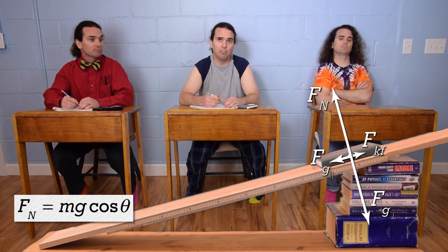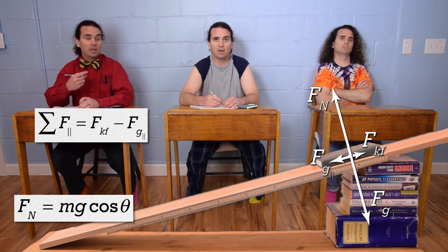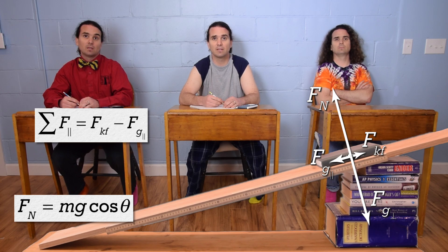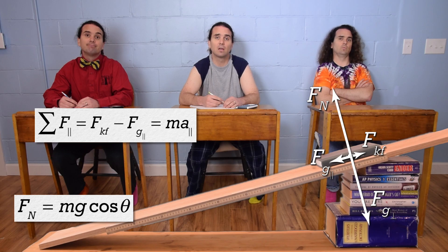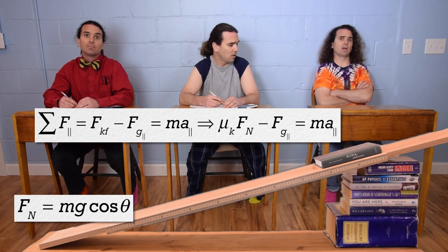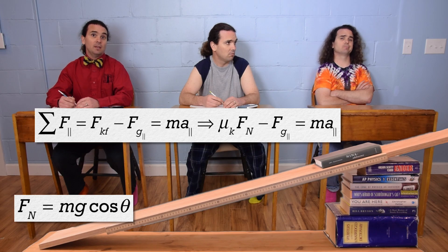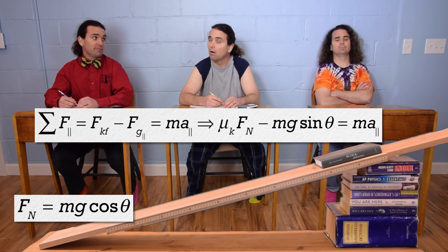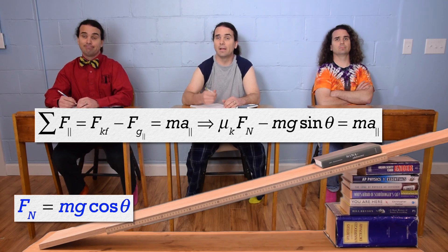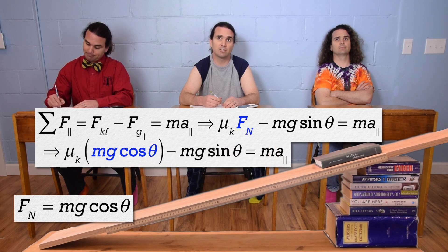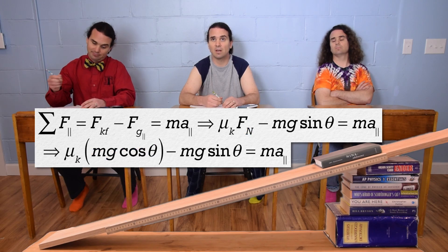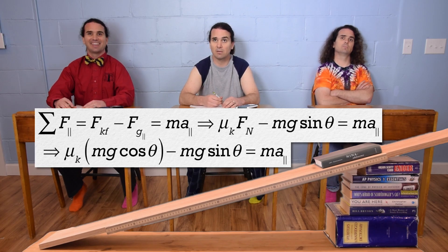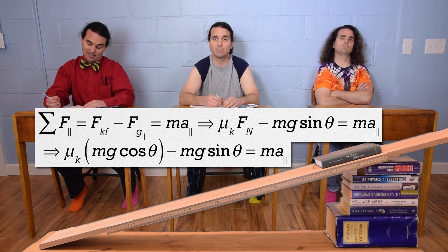Now we can sum the forces in the parallel direction. The net force in the parallel direction equals force of kinetic friction minus force of gravity parallel, which equals mass times acceleration in the parallel direction. We can substitute the coefficient of kinetic friction times force normal for the force of kinetic friction, and mass times acceleration due to gravity times sine theta for the force of gravity parallel. From our equation holster, we substitute mass times acceleration due to gravity times cosine theta for the force normal. We now have: coefficient of kinetic friction times mass times g times cosine theta minus mass times g times sine theta equals mass times acceleration parallel.